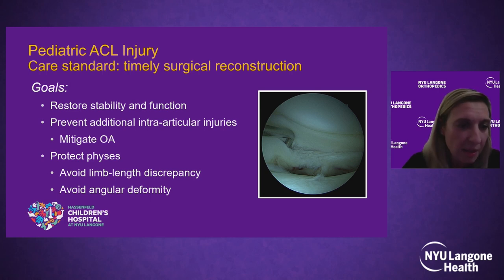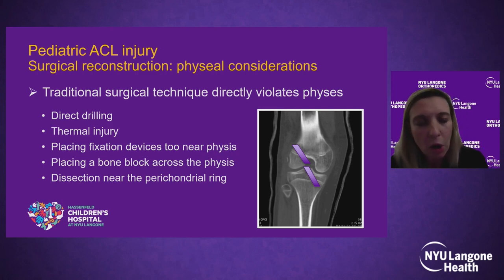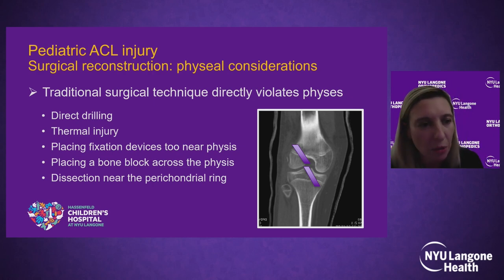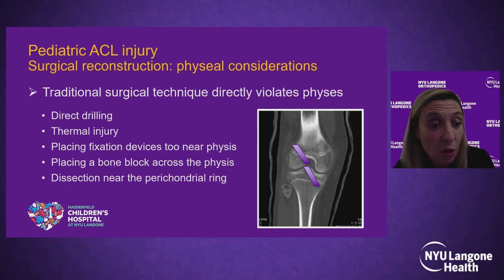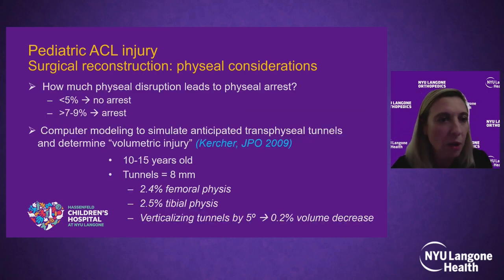While doing this, we want to protect the physes to avoid iatrogenic limb length discrepancy or angular deformity. Our traditional surgical techniques directly violate the growth plate through direct drilling, thermal injury, fixation devices too near the growth plate, a bone block across it, or dissection near the perichondrial ring. Longstanding orthopedic dogma tells us that once you exceed more than 7% to 9% of physeal volumetric injury, you're more likely to see a physeal arrest.